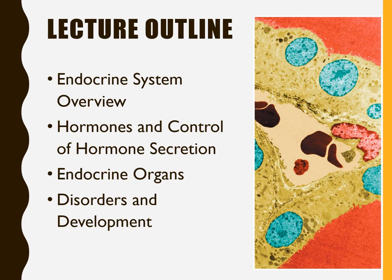We're going to start with an overview of the endocrine system and what it does. Then we'll get into hormones and how we control hormone secretion in the body. We'll spend most of the time talking about the actual endocrine organs, which hormones they secrete and what they control. At the end we'll talk about some very common endocrine disorders and a little bit about development.